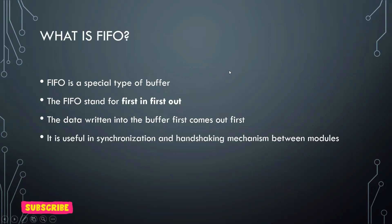What is FIFO? FIFO is a special type of buffer. The name stands for first in first out. The data which is written into the buffer comes out first. It is useful for synchronization and handshaking mechanism between modules.